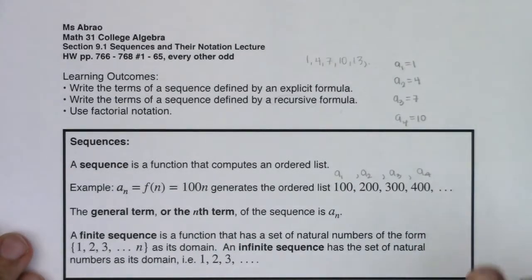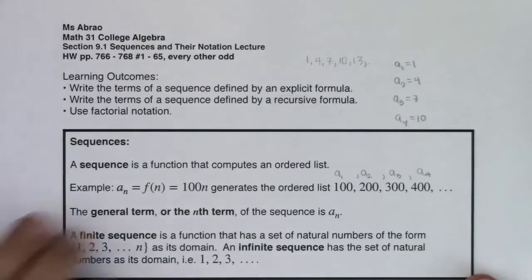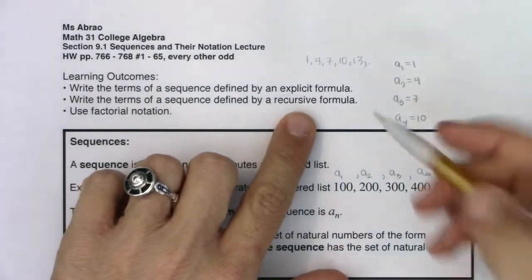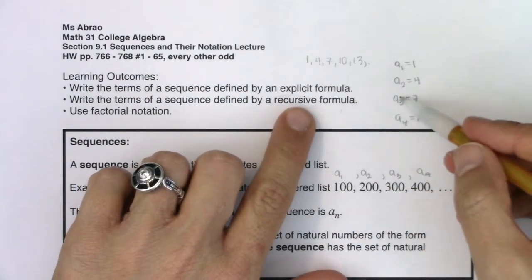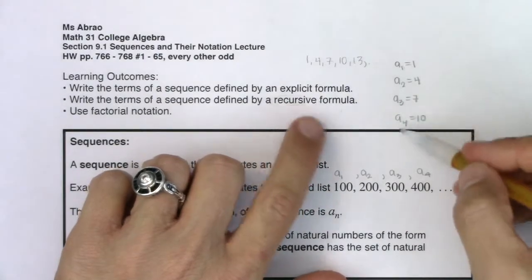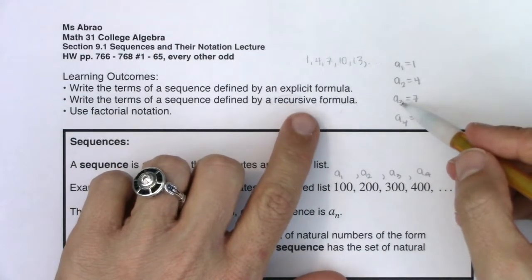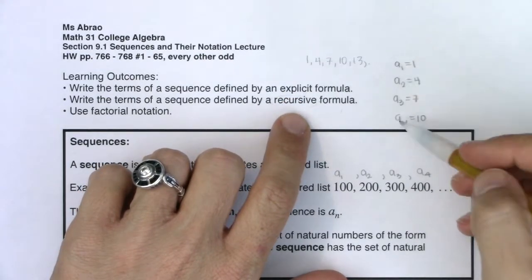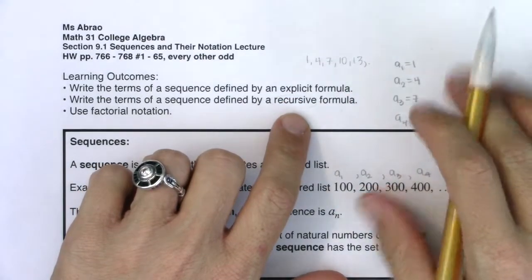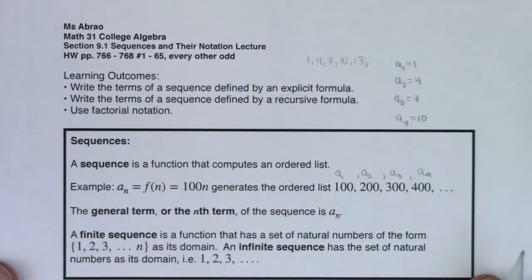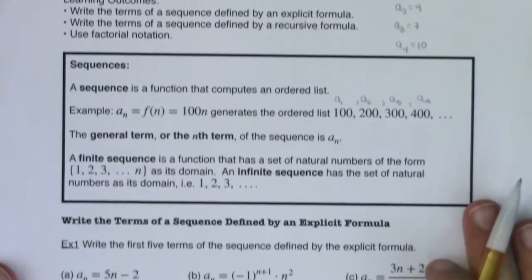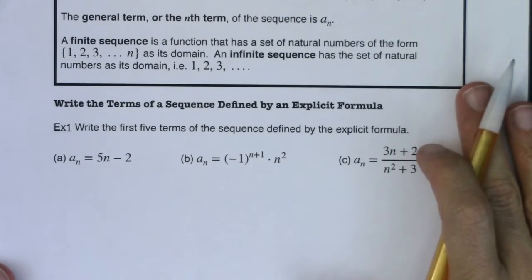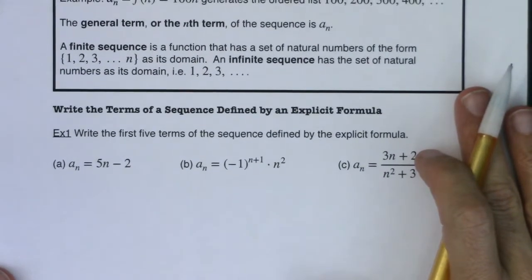Let's practice a couple of these sequences defined with explicit formulas. Then I'll get into how you define a recursive formula. With a recursive formula, I would define a sub 4 in terms of a sub 3, a sub 3 in terms of a sub 2, and a sub 2 in terms of a sub 1. We recurse — we regress back. That's a whole different set of things we'll get to a little bit later in this section.